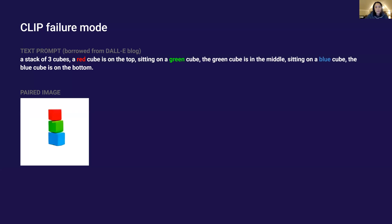This project is motivated by a particular failure mode of CLIP. Consider this text prompt which asks for a red cube on top of a green cube on top of a blue cube. The image forms a natural pairing with the text.